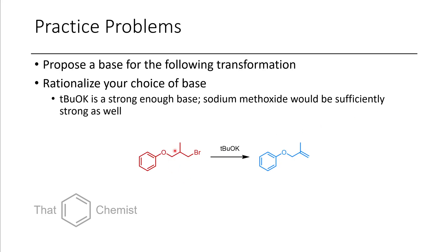I gave you this compound and asked you to suggest a base for the following transformation. In this case, we can just use tert-butoxide or another strong base such as sodium methoxide, which would just deprotonate this position and form the alkene. There's only really one elimination reaction that could happen because this phenoxide would be a much poorer leaving group. So we obtain this sole product using a strong base such as tert-butoxide.